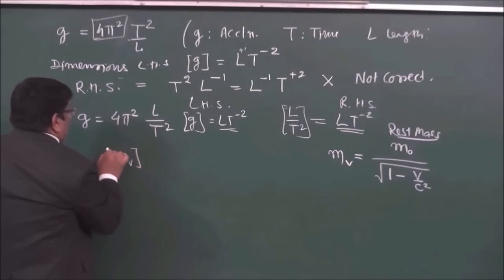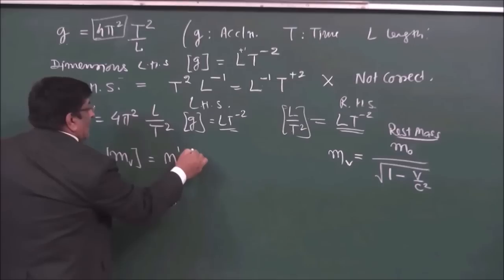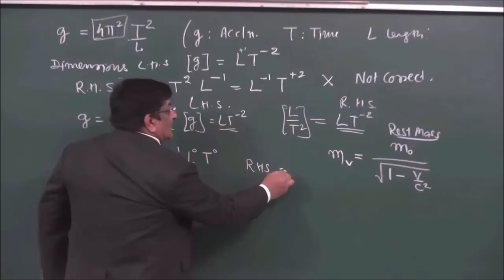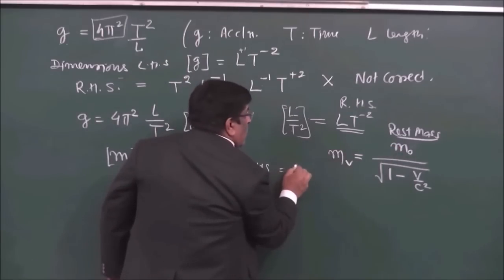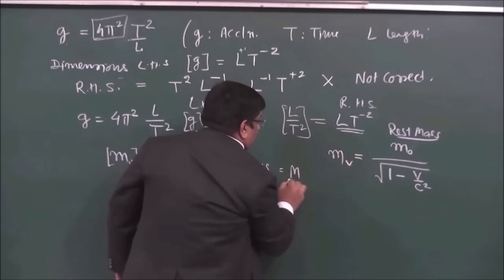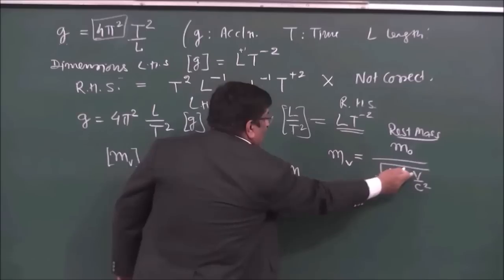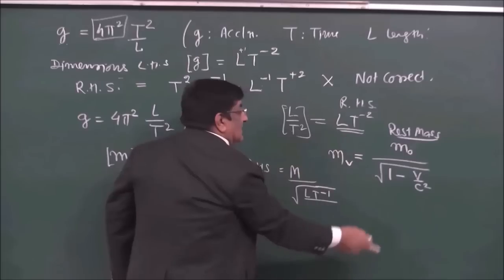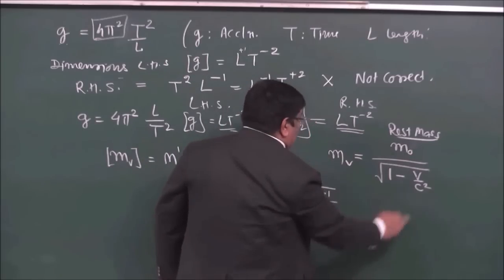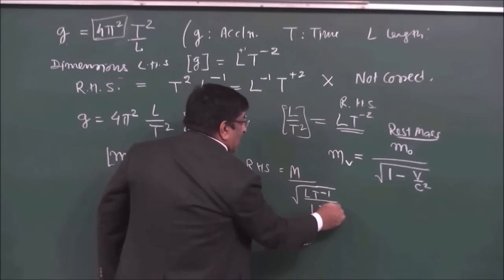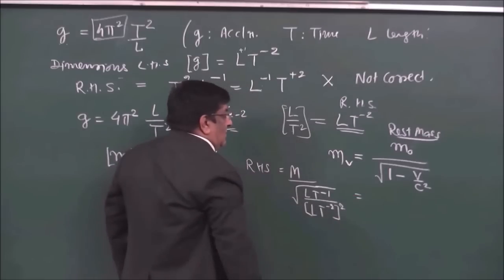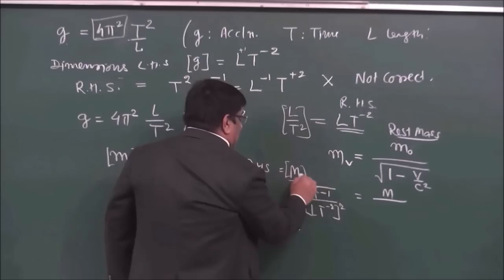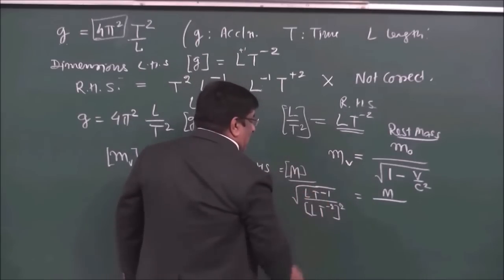LHS: mass has dimension M — no L, no T. RHS: rest mass M divided by a dimensionless denominator. Inside the root, v has dimension LT⁻¹ and c is velocity of light, also LT⁻¹. So v/c² has dimension LT⁻¹ divided by (LT⁻¹)², giving LT⁻¹ divided by L²T⁻², which equals L⁻¹T.